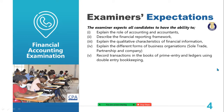Number five, you are expected to have the ability to record transactions in books of prime entry — like the sales day book, the purchases day book, the cash book, and the ledgers. As you are preparing the ledgers and accounts, are you able to apply correctly the principle of double entry bookkeeping? Number six, the examiner will examine your ability to prepare a trial balance and correct any errors committed by the accountant.